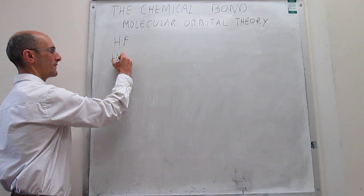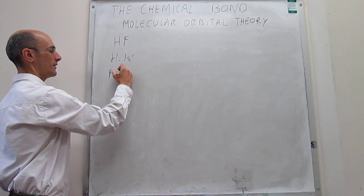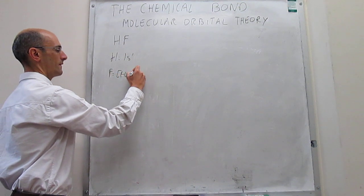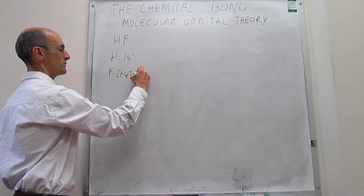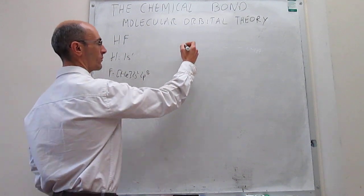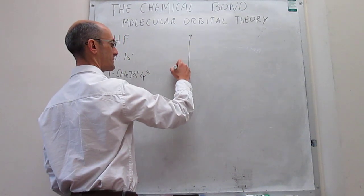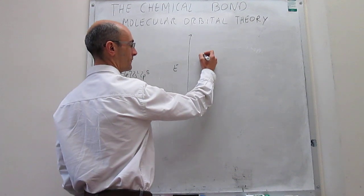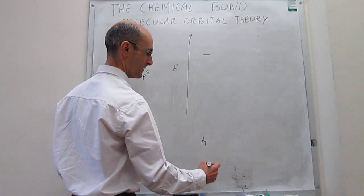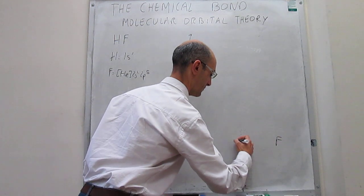The electronic configurations of the atoms are: hydrogen is 1s1, and for fluorine you have helium core, then 2s2, 2p5. We draw the molecular orbital diagram with an energy scale, and here we'll have the 1s orbital of hydrogen, with fluorine on the side and HF in the middle.